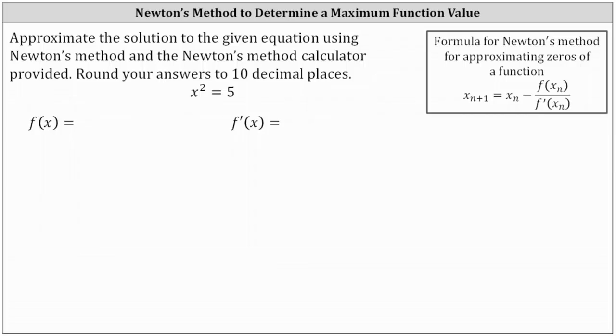We're asked to approximate the solution to the given equation using Newton's method and the Newton's method calculator provided, and we're told to round to 10 decimal places. We are given the equation x squared equals five.